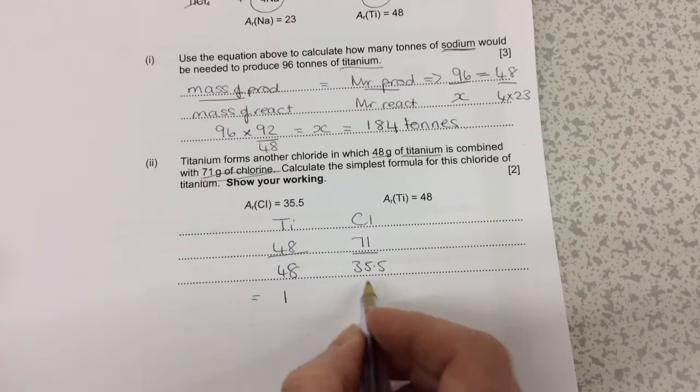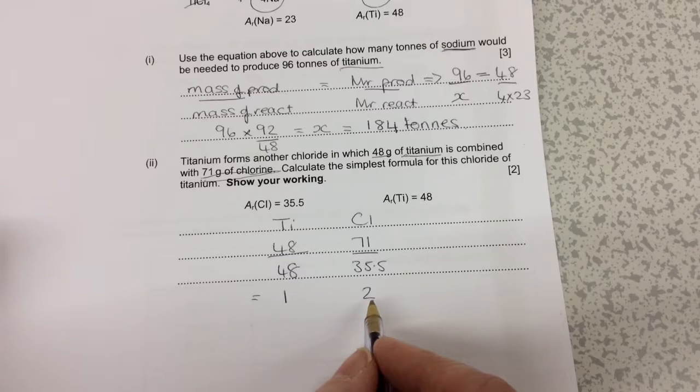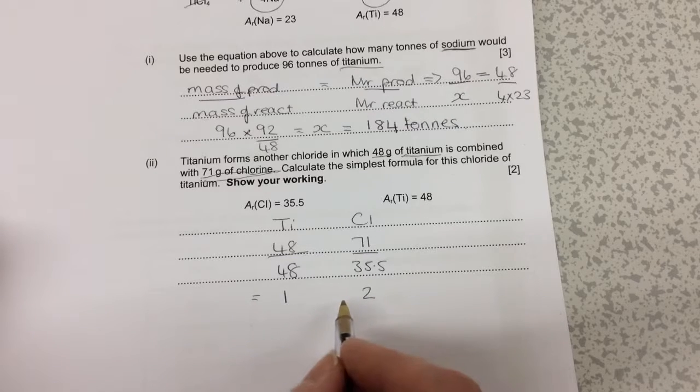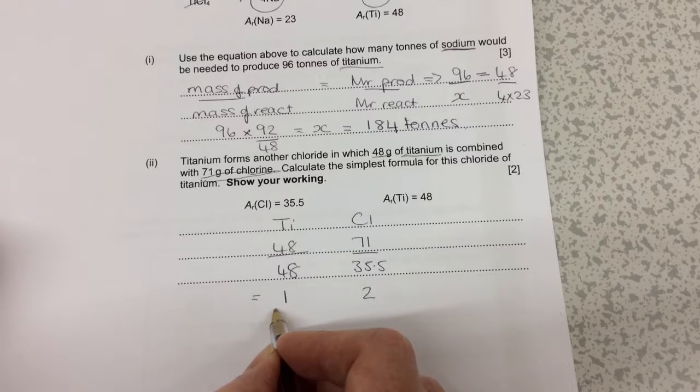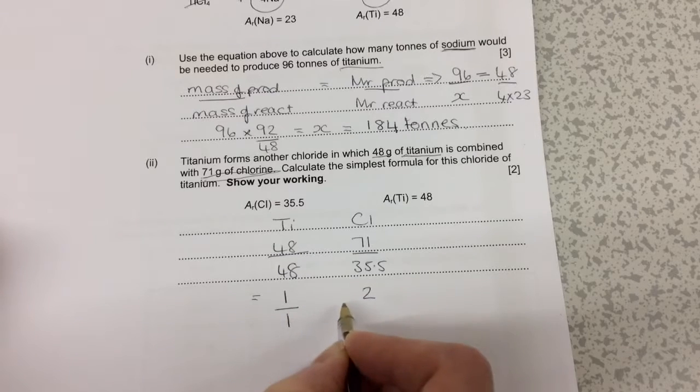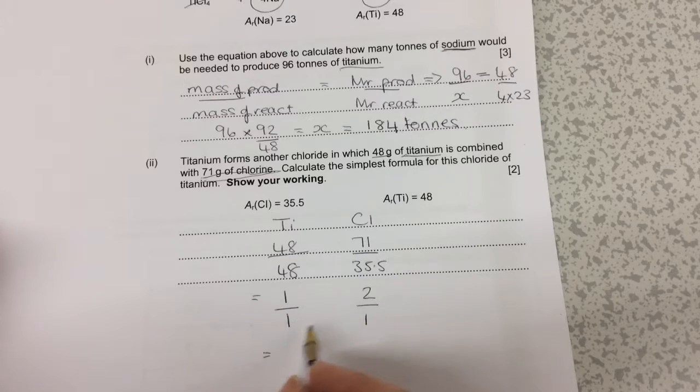Usually at this step we might have decimal place answers, so what we should do is divide by the smallest number. Out of these two numbers we can see that one is the smallest, so it's one divided by one and two divided by one, which again gives us the same ratio. In the exam you're unlikely to have whole numbers at this point and you'd have to go to this step.